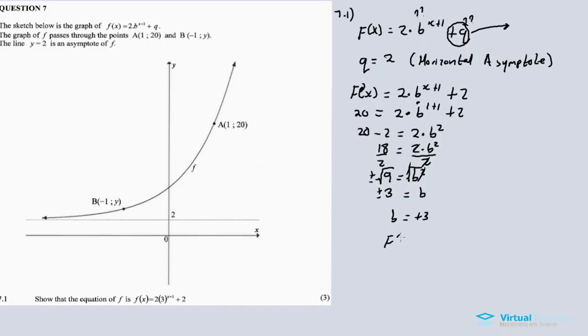f(x) is equal to 2. I just substitute the value of b and q. The q is the horizontal asymptote, and b I calculated using coordinate A. So this is how you show the equation of f.